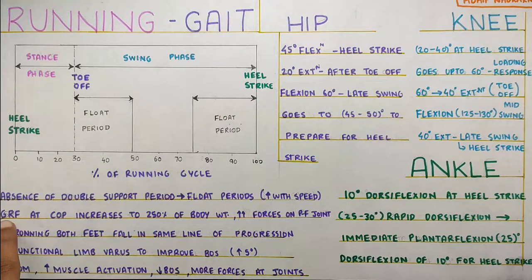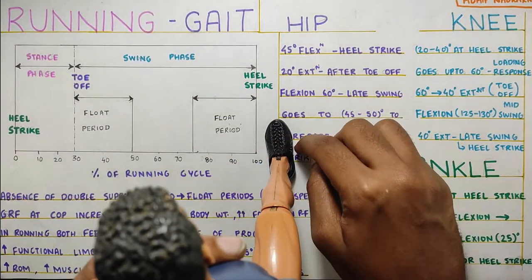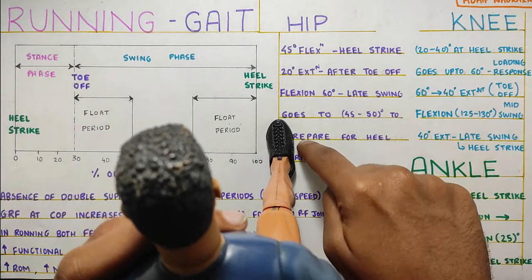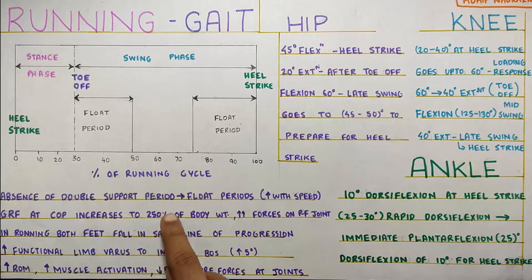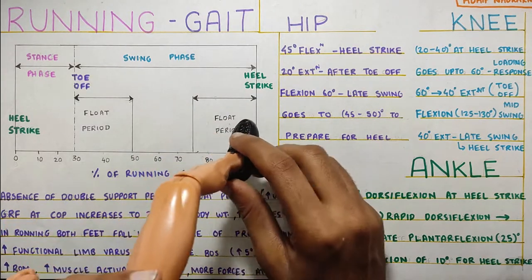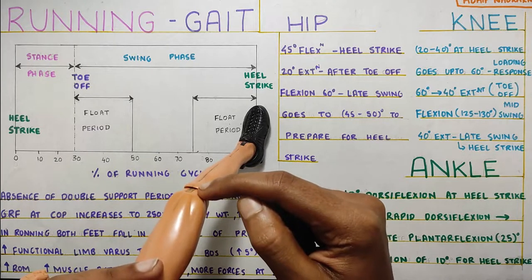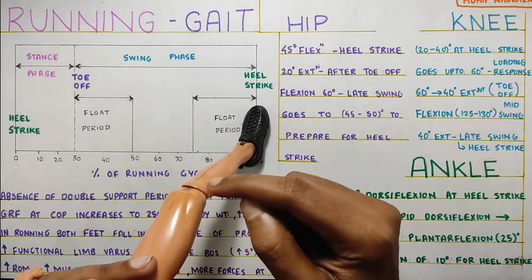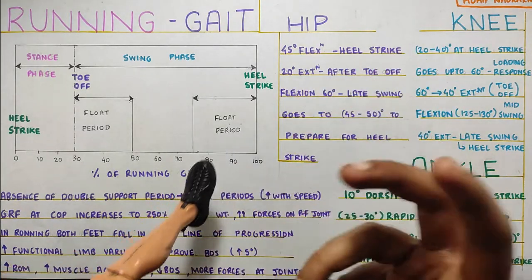Your ground reaction force at your center of pressure — when you put your foot on the ground there will be a center of pressure, and the ground reaction force passes through that. This ground reaction force will increase by 250% of your body weight. Because there is so much force at the knee joint, the patellofemoral stresses created at the knee joint will also be way more than what occurs during normal walking.